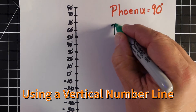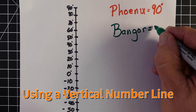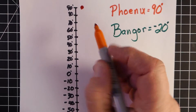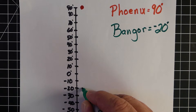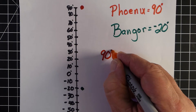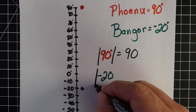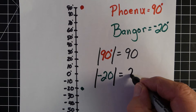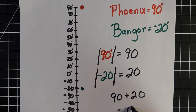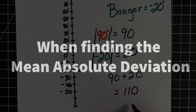Next, we're going to look at a vertical number line — similar to the last one but going up and down — and look at the temperatures of Phoenix and Bangor. Phoenix is 90 degrees and Bangor is negative 20. We want to find the distance between these two, so we plot our points. Just like last time, we're going to add their absolute values. The absolute value of 90 is 90, and the absolute value of negative 20 is a positive 20. So 90 plus 20 is 110 — the difference in temperatures between the two cities is 110 degrees.